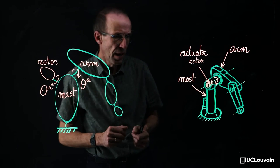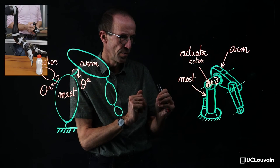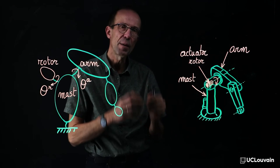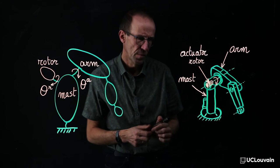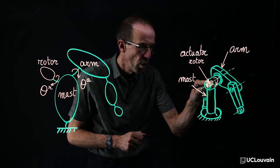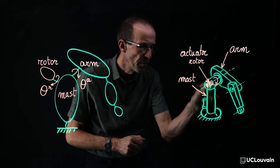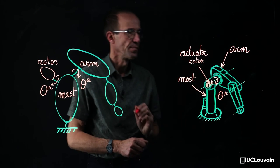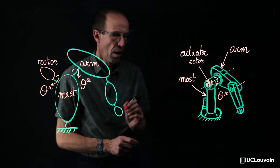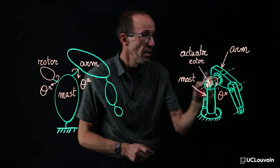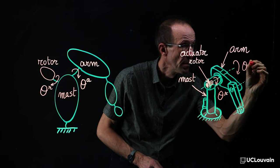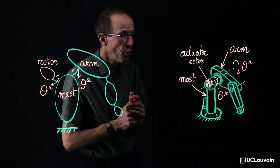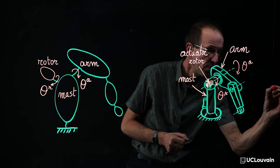As a last example, let's consider a serial robot in which the dynamics of the rotors of its actuators must be captured during the 3D motion. Let's, for instance, consider the rotor mounted on the rotating mast, for which the rotation angle is denoted as θR. It is responsible for the rotation θA of the first arm of the robot through a gear, of which the transmission ratio equals α.